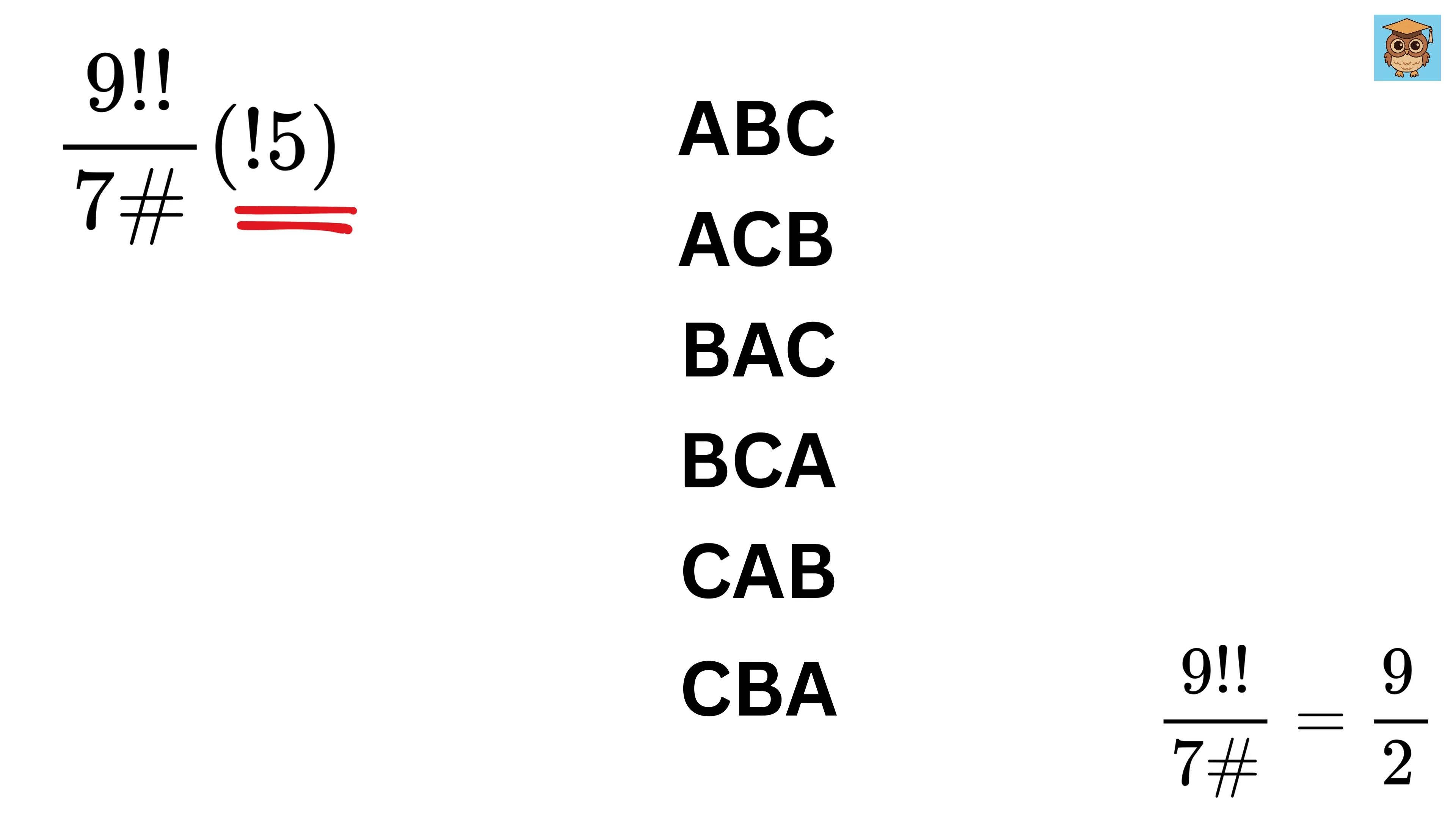Now, in the case of a sub-factorial, we count how many ways we can arrange A, B, and C so that none of them are in their original spots. For that, suppose the initial arrangement is A, B, and C.